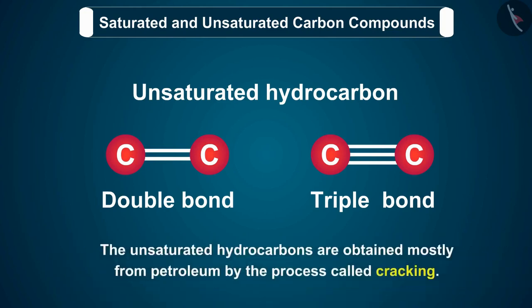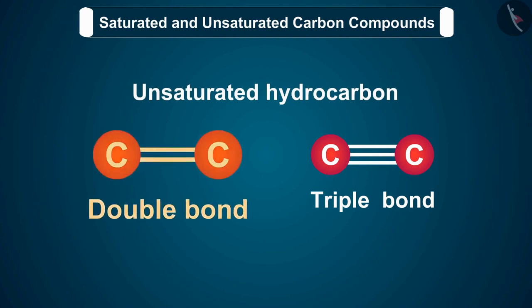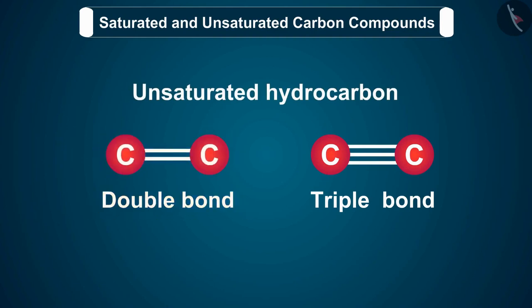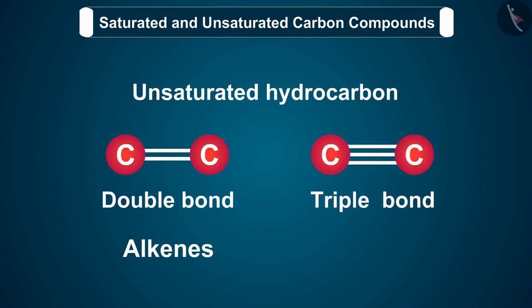The unsaturated hydrocarbons are obtained mostly from petroleum by the process called cracking. Unsaturated hydrocarbons are of two types: double-bonded hydrocarbons, also called alkenes, and triple-bonded hydrocarbons, also called alkynes.